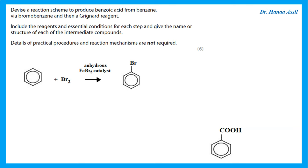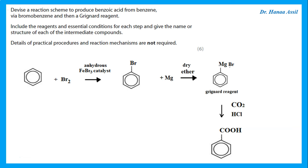Now, to make the Grignard reagent from bromobenzene, we add magnesium in the presence of dry ether. That gives the Grignard reagent. To change that into an acid, we react it with carbon dioxide, then HCl. This places a COOH group on the benzene ring, giving benzoic acid.